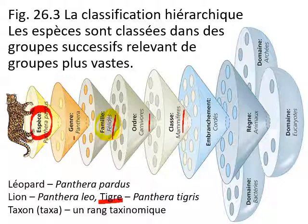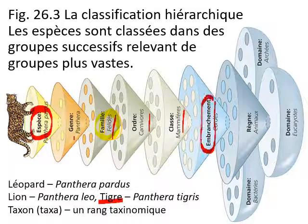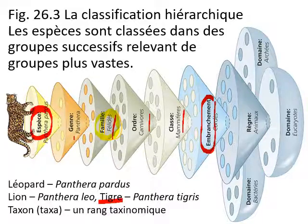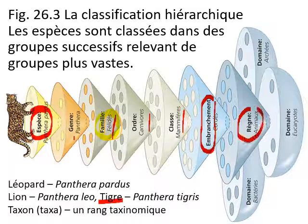In English we call this a phylum — chordata. And they are in the kingdom Animalia, which we know is in the domain Eukaryote. So all the organisms in the domain Eukaryote have eukaryotic cells.